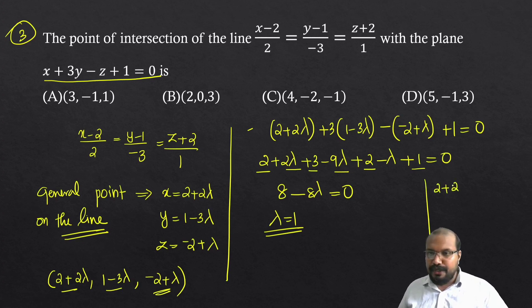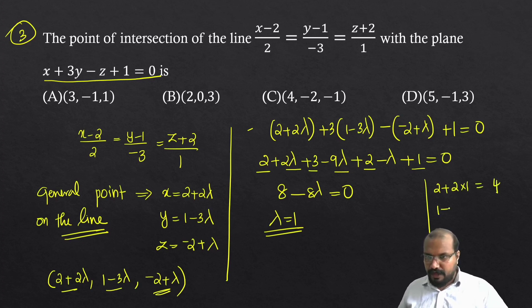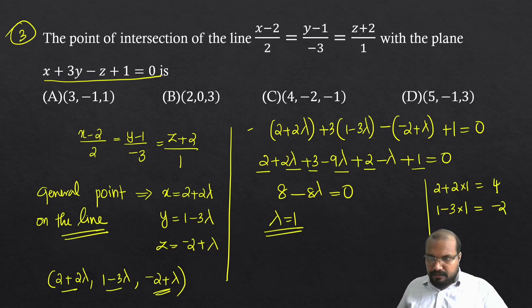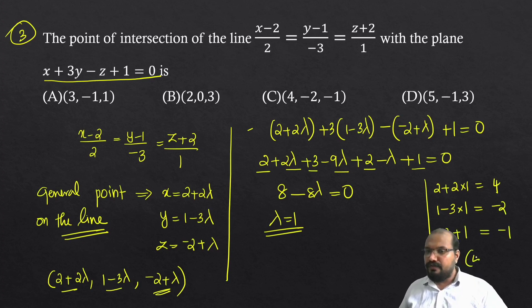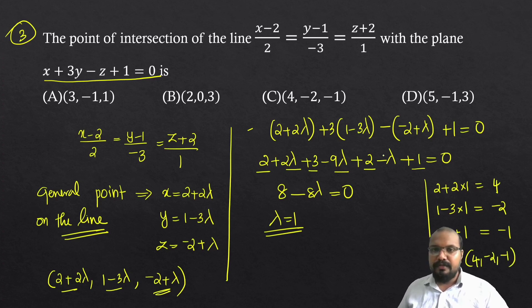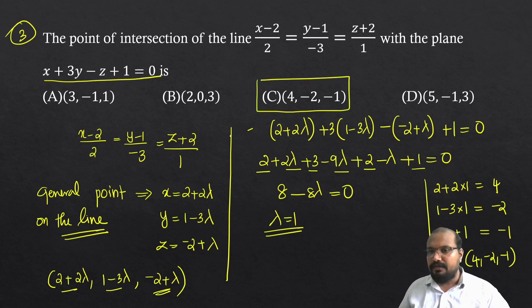Substituting lambda = 1 into the general point: x = 2 + 2(1) = 4, y = 1 - 3(1) = -2, z = -2 + 1 = -1. The point of intersection is (4, -2, -1).